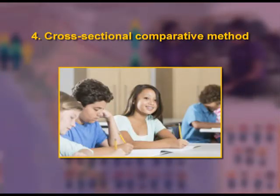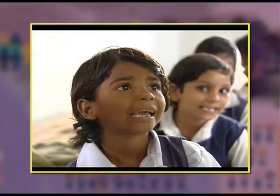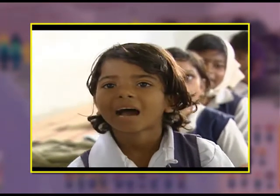Fourth, cross-sectional comparative method — this type focuses on enabling data that can compare two or more social settings or groups, usually at a broad level at one particular point in time. For example, students in a particular class are divided into three groups on the basis of parental professions: business, service employment, and wage earning. Using this method, an investigator can collect information separately from all three groups to examine their educational performance.